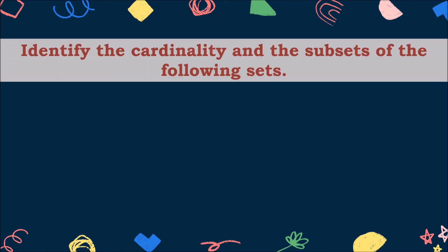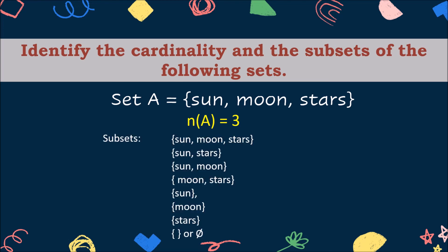Identify the cardinality and the subsets of the set A that has an element of sun, moon, and stars. Good job! The cardinal number is equal to 3 and the subsets are sun, moon, stars; sun and stars; sun and moon; moon and stars; sun; moon; stars; and empty set.